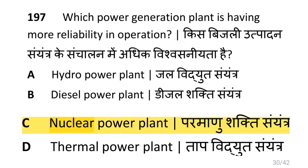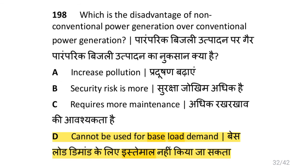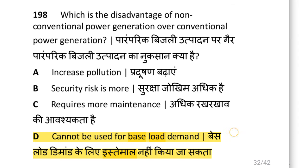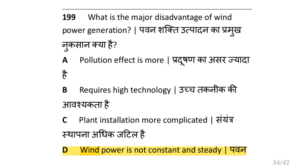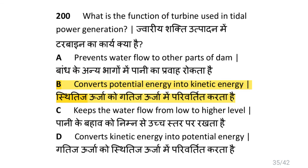Which power generation plant has more reliability in operation? That is, nuclear power plant. Which is the advantage of non-conventional power generation over conventional power generation, i.e. cannot be used for base load demand? What is the major disadvantage of wind power generation, i.e. wind power is not constant and steady? What is the function of turbine used in tidal power generation, i.e. to convert potential energy into kinetic energy?